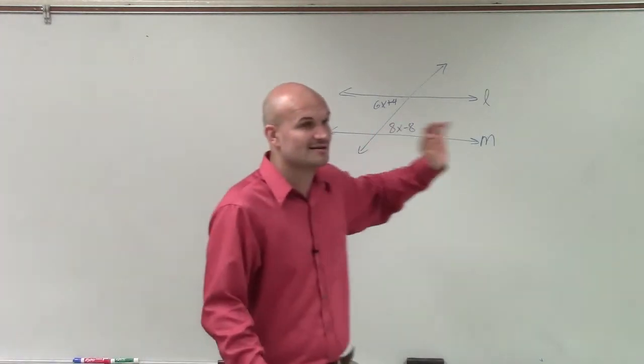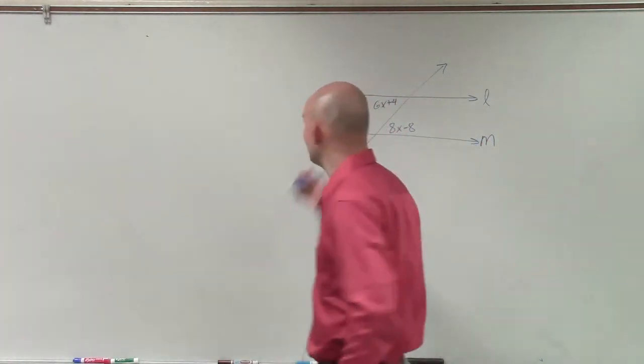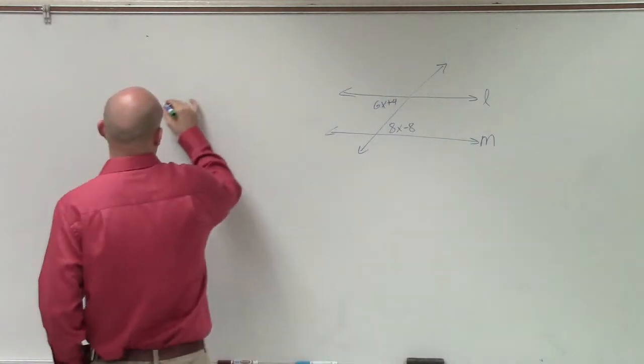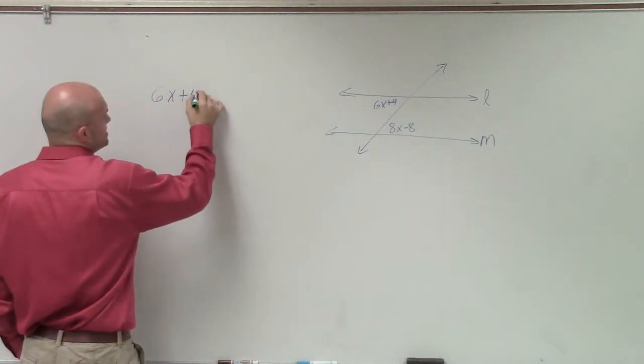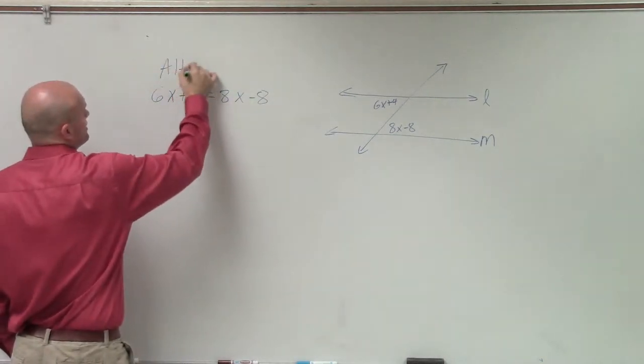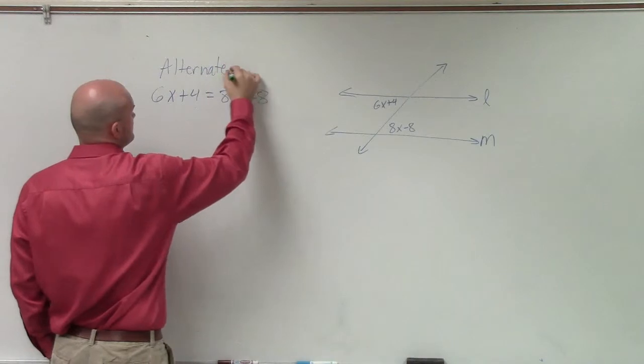So these are alternate interior because they're inside of the lines we're trying to prove as parallel. So therefore, we write an equation 6x plus 4 equals 8x minus 8, and we say alternate interior.